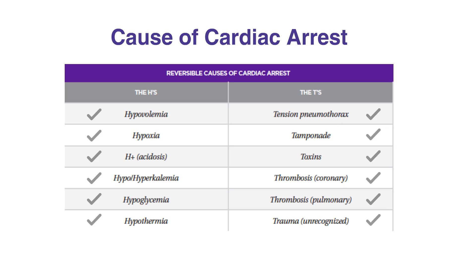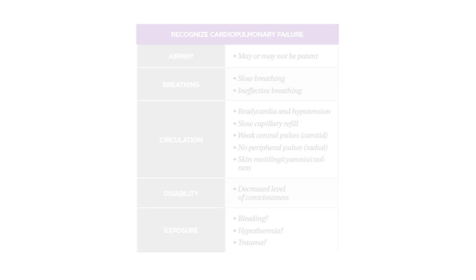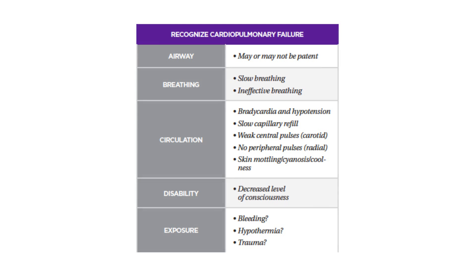Recognizing cardiopulmonary failure can be done by following the ABCDE survey, which checks for airway, breathing, circulation, disability, and exposure. For further details on these factors, refer to table 22 in your corresponding PALS manual.